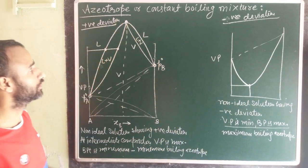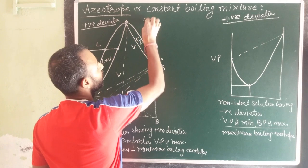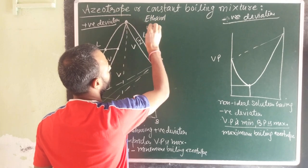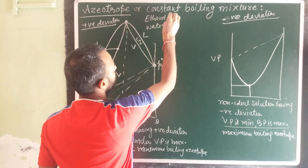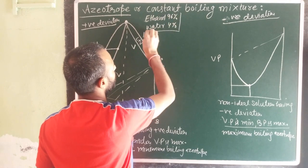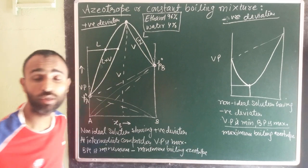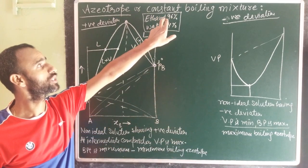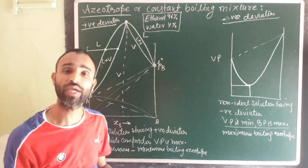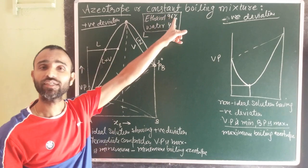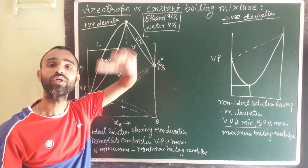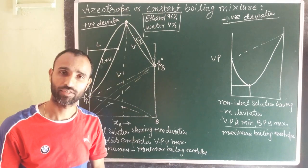For example, ethanol and water — at a composition of 96% ethanol and 4% water — forms an azeotropic mixture. It cannot be separated or concentrated further. Up to this point, it can be concentrated by fractional distillation, but after that, if we want to get 100% ethanol, we should use some other method.